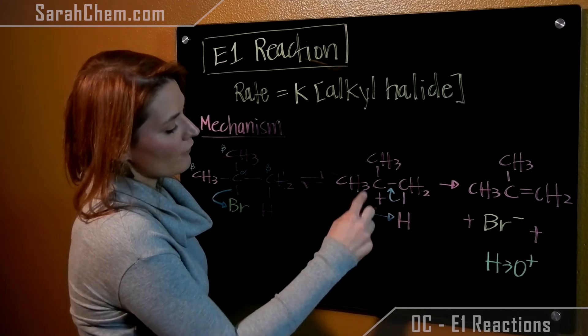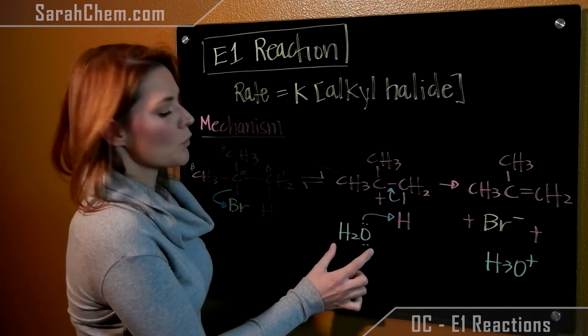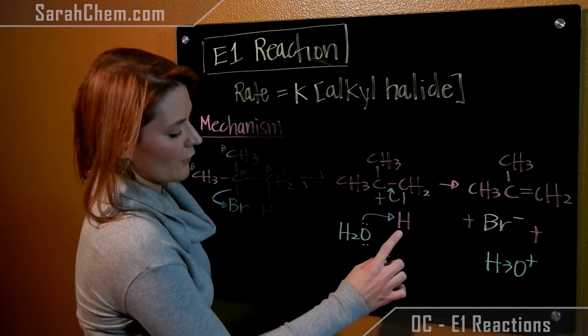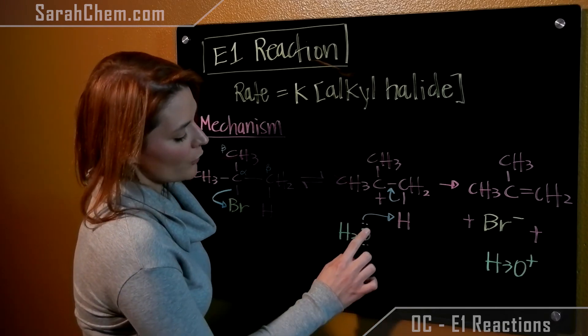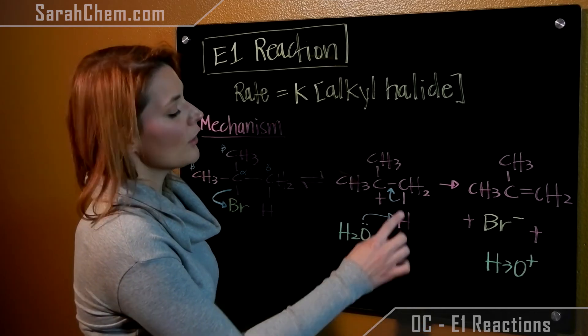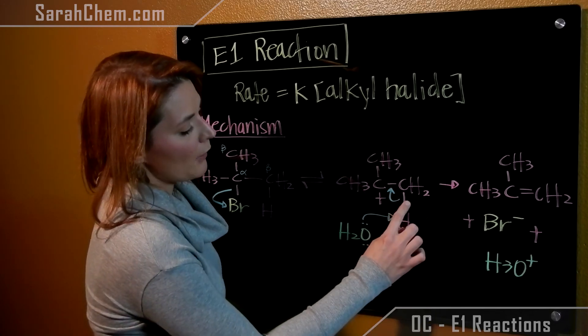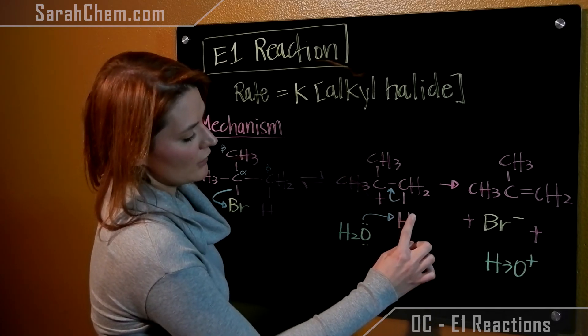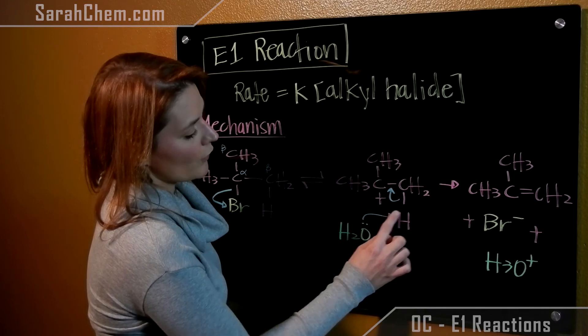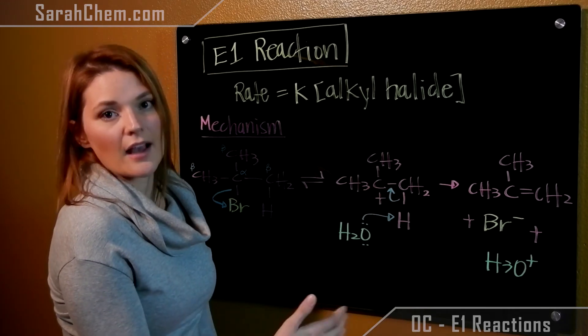So now in this case, we have the carbocation. It's primed itself for a base such as water to come and attack that hydrogen. On the oxygen, you have lone pairs. Those lone pairs will be used to pull off the hydrogen from this beta carbon. When this bond forms, this bond breaks between the carbon and the hydrogen. And those electrons are now transferred between both of those carbons, making sure everything still has its octet.